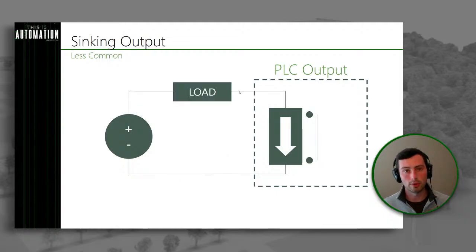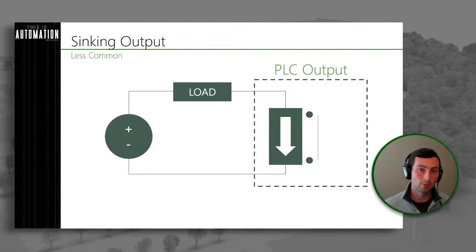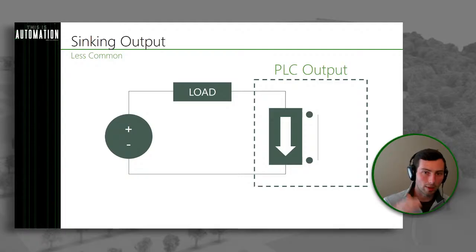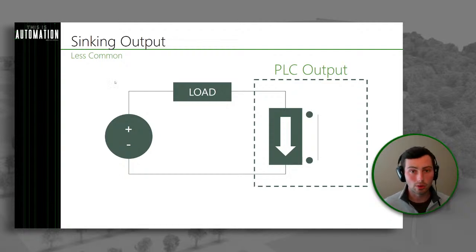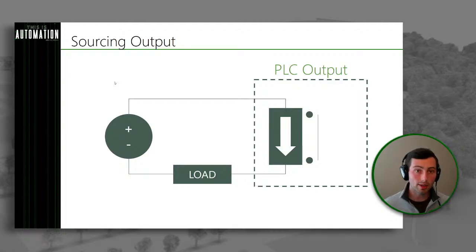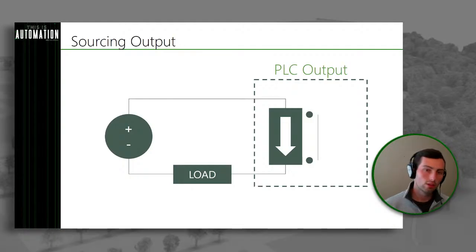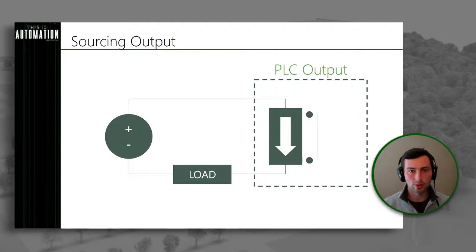Now let's look at outputs. We've got a sinking output — this is the less common one. The more common would be a sourcing output, where the output is actually providing a voltage source. In the sinking output case, we have the plus side of our battery to the load, to our PLC output — which is acting as the switch — and then to the minus. So our PLC output card is providing the path to ground, sinking the current through the load. The sourcing output — the more common one — is actually providing a voltage source: from the plus side of our battery to the output card, through our load. In this case, the PLC output is sourcing the current to the load.